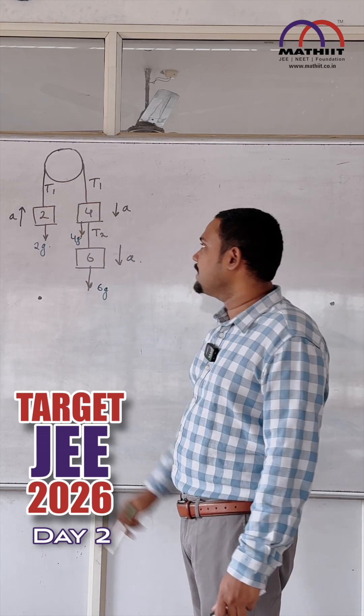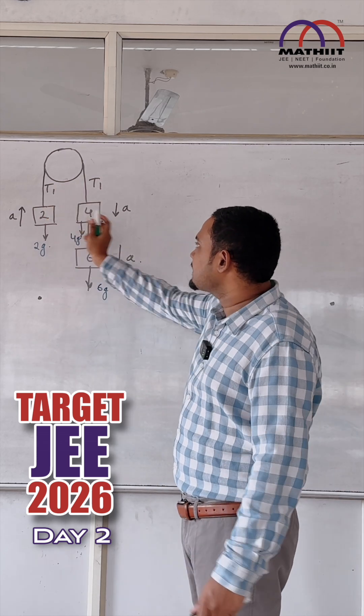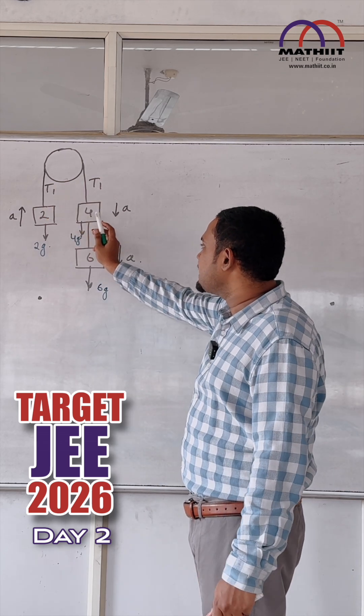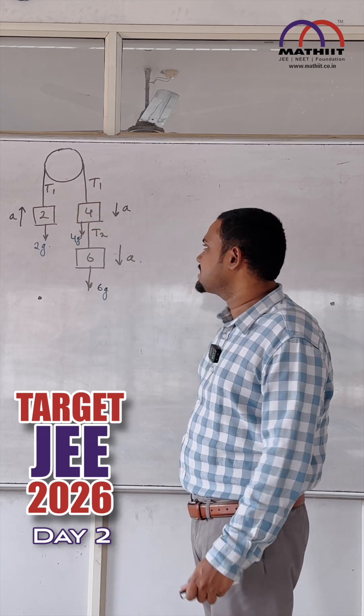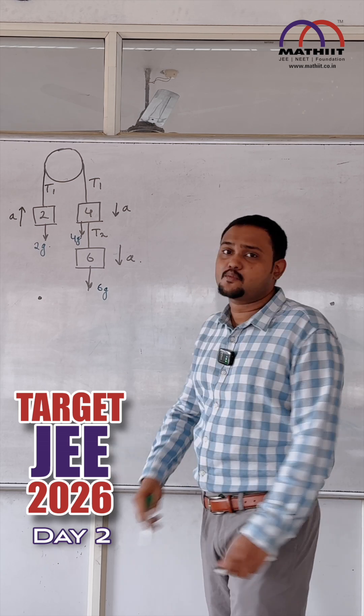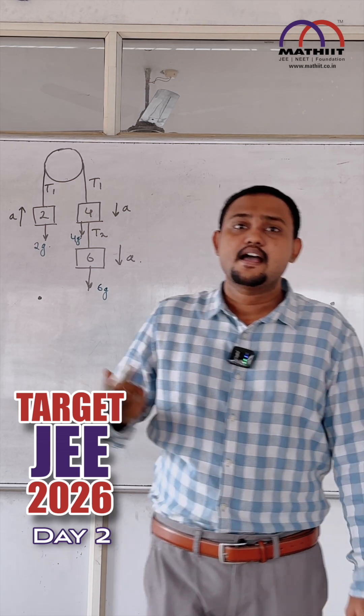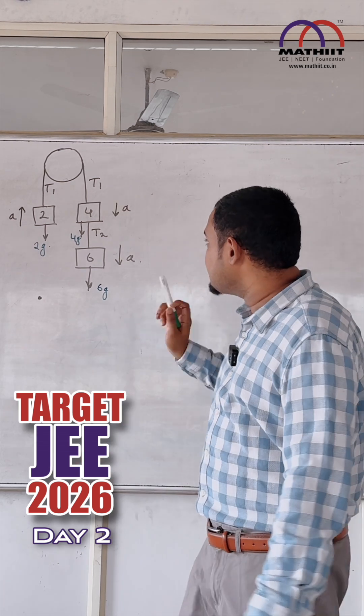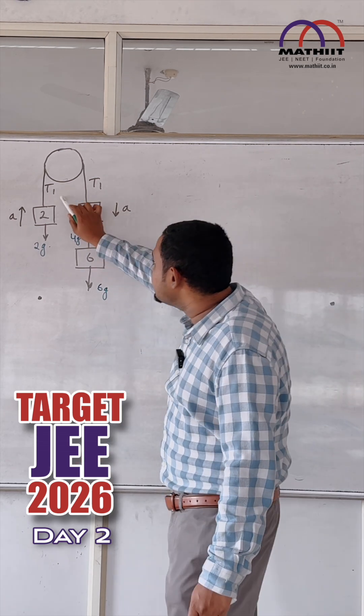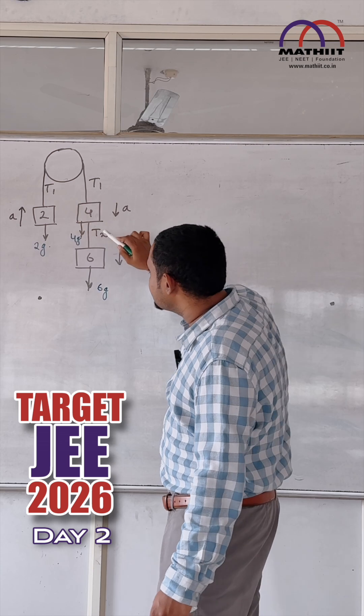You have a pulley and there are three masses: 2 kg, 4 kg, and 6 kg. The question is: what is the acceleration of the masses and what are the tensions T1 and T2?